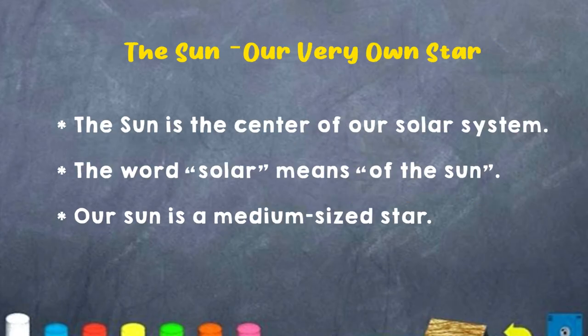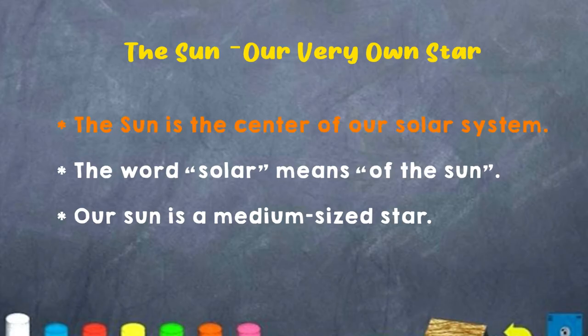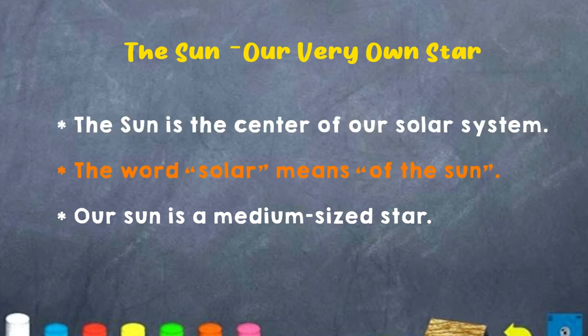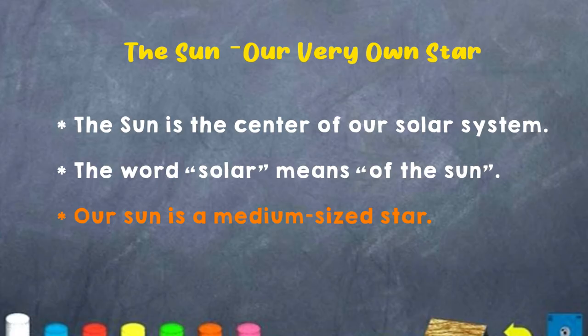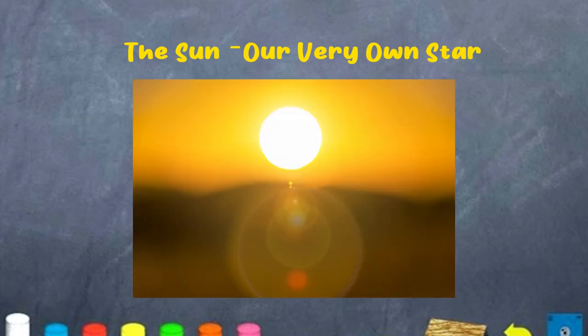Let us start with the sun. The sun is our very own star. The sun is in the center of our solar system. The word solar means "of the sun." Our sun is a medium-sized star. Here, boys and girls, is an image of our sun.